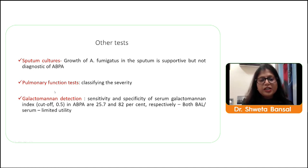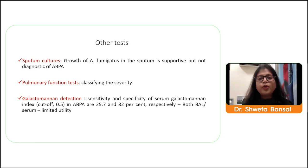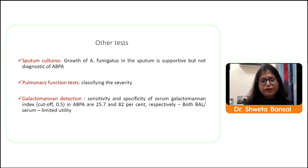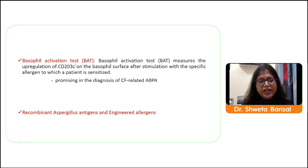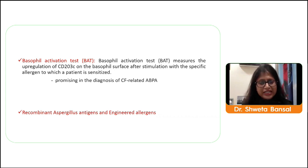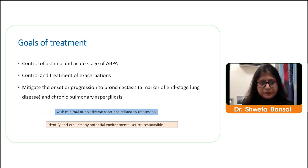Galactomannan detection is very important for invasive aspergillosis diagnosis, but for ABPA its sensitivity is only 25 percent with specificity of 82 percent; both BAL and serum have limited utility for ABPA and are not generally recommended. Newer tests like basophil activation tests have shown promising results in CF-related ABPA, and recombinant aspergillus antigens can detect specific IgE to prevent cross-reactivity, but these are not easily available and not yet in guidelines.